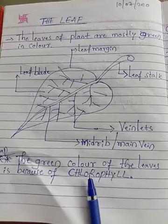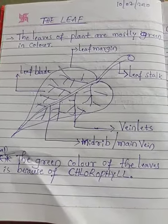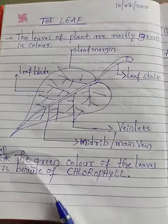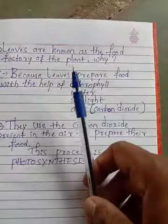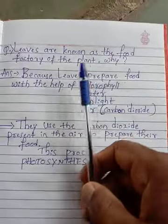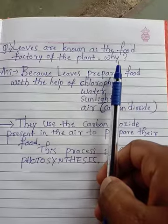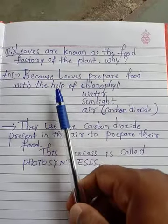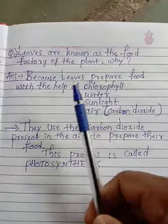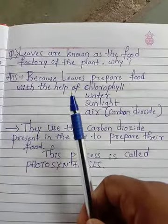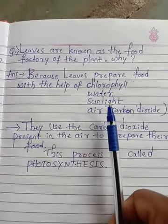Leaves are also known as the food factory of the plant. Why? Because leaves prepare food with the help of chlorophyll, water, and sunlight.